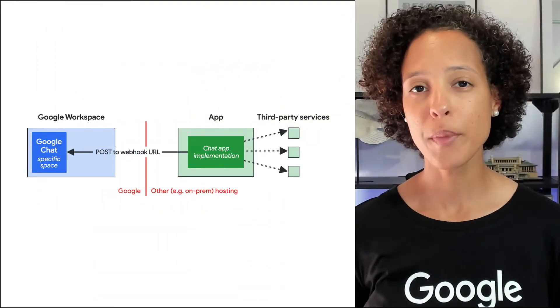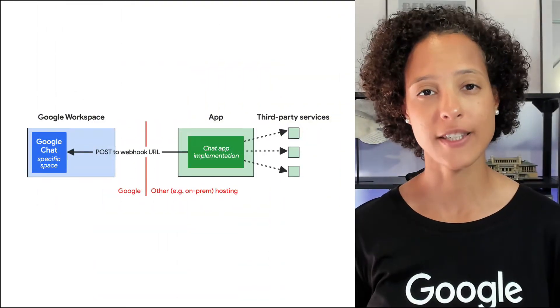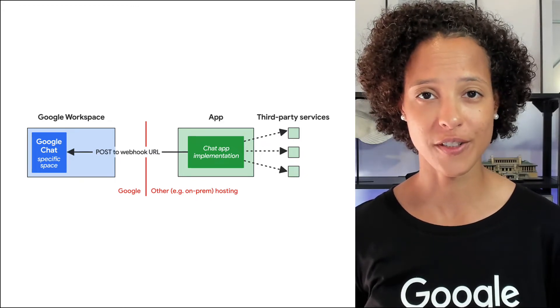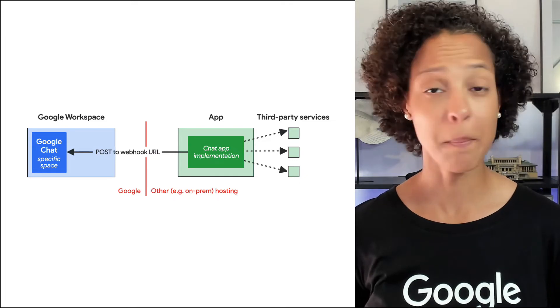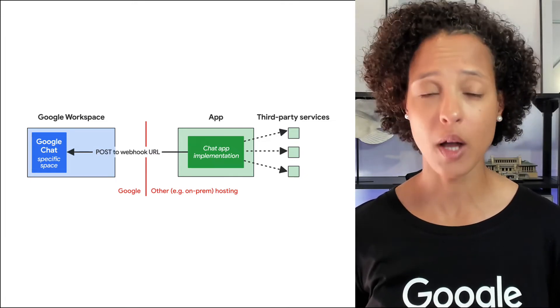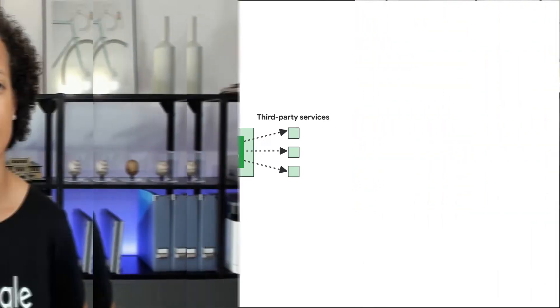With webhooks, you can send asynchronous messages into Google Chat from applications that aren't chat apps. Webhooks are only for the Google Chat spaces where they were added to and they do not allow user interaction. This chat space hard-coding means that you can neither share your chat app nor publish it on the Google Workspace Marketplace. Incoming webhooks are best suited for simple alerts to notify, for example, on-call personnel when a server goes down.